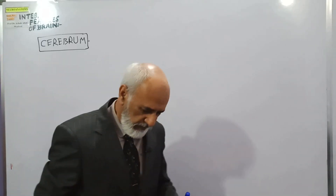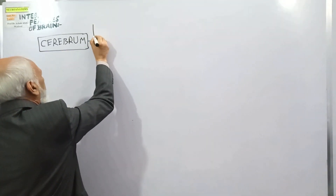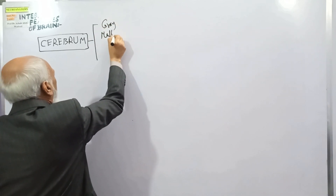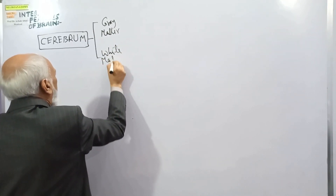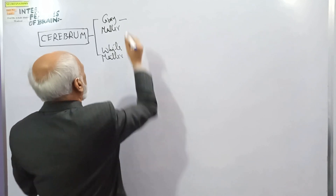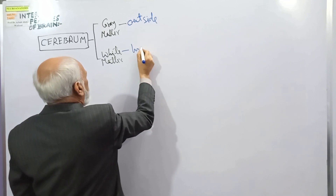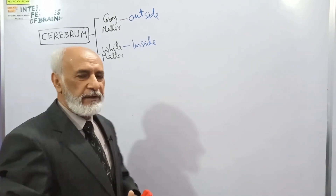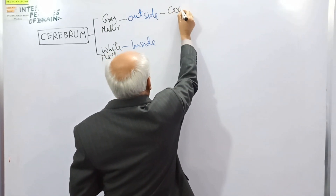Now cerebrum consists of grey matter and white matter. The grey matter is outside and white matter is inside. The grey matter of the cerebral hemisphere has a special name known as the cerebral cortex.